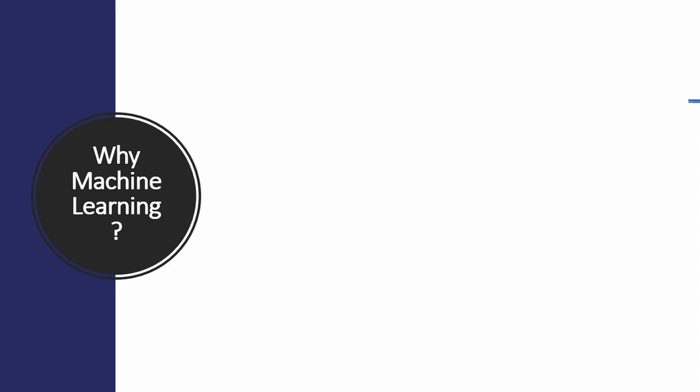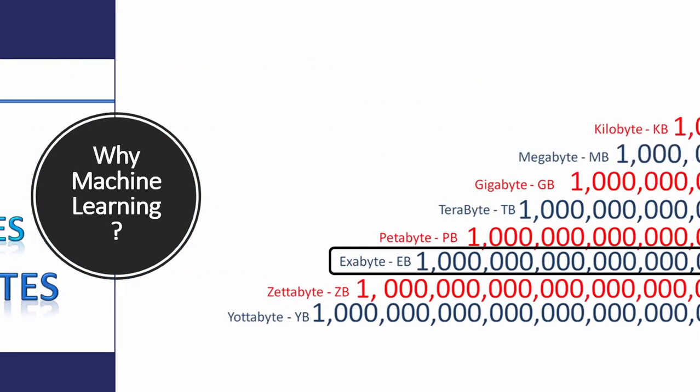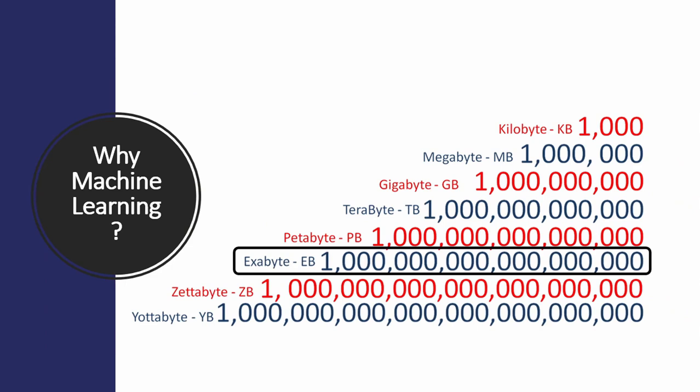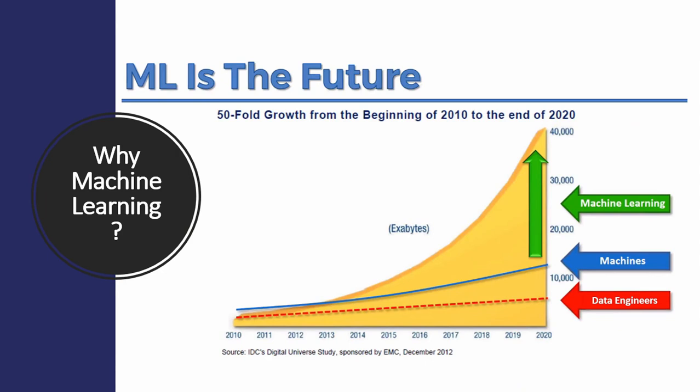Why is machine learning important? Data is increasing day by day. It has now reached 41,000 exabytes and is expected to reach zettabytes in the future. As a data engineer, we can handle data up to a few hundreds of zettabytes, while machines can handle data up to a few thousands of zettabytes.